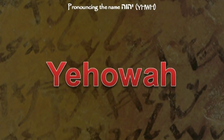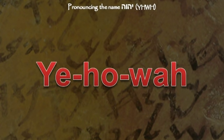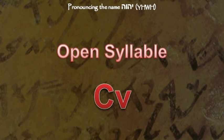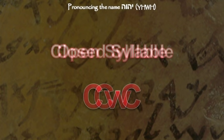Hebrew, like all other languages, follows rules — rules of pronunciation and rules of grammar. In order to go into the details about how Yod-Heh-Wah-Heh should be pronounced, we will need to get into some of these rules. The syllables of a word or name are broken up in specific ways, just as English does. There are two kinds of syllables: open and closed. An open syllable is a consonant and vowel, and a closed syllable is a consonant-vowel-consonant.